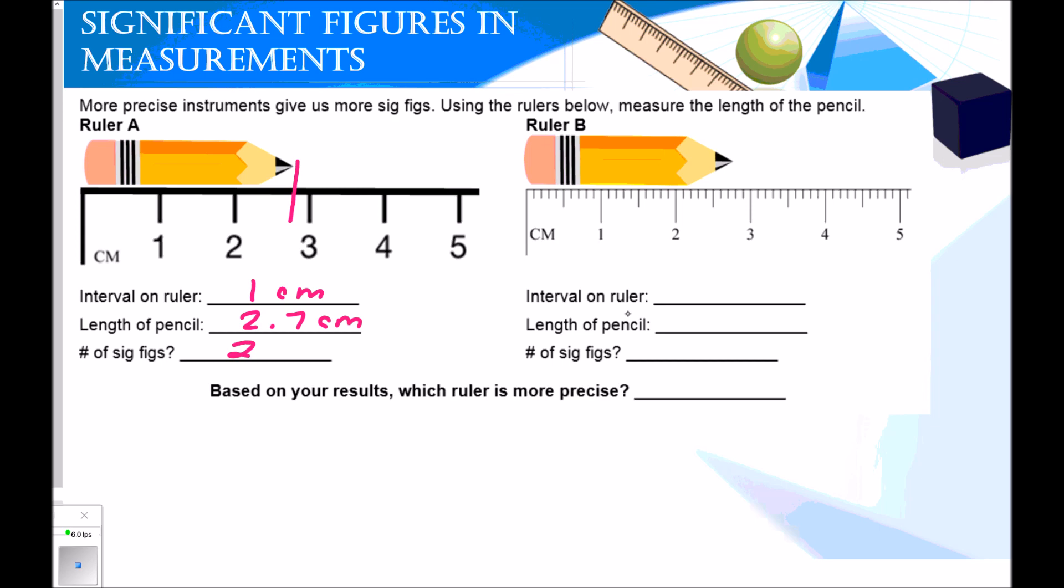Looking at ruler B, the interval on the ruler is much smaller. The interval is actually 0.1 centimeters. So since I'm certain of the tenth's place, I'm going to estimate the hundredth's place. That's where my human error or degree of uncertainty will be is in the hundredth's place. I'm certain that's 2.5, 0.6, 0.7. It looks like it's between 0.7 and 0.8 to me. So I'm going to write 2.75. So this very last digit is my estimated digit. And this number or measurement has three significant figures. So remember, more precise instruments give us more significant figures. Based on the results, which ruler is more precise? Ruler B, hence it's given us more significant figures.